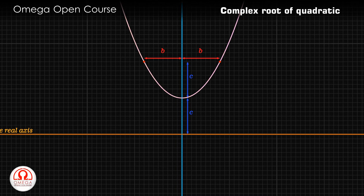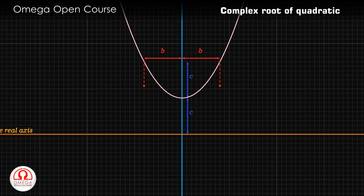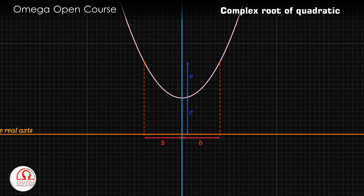In other words, mark points on the graph of the expression at height twice the height of the lowest point of the graph. The distance of these points from the y-axis gives the imaginary part of the roots.